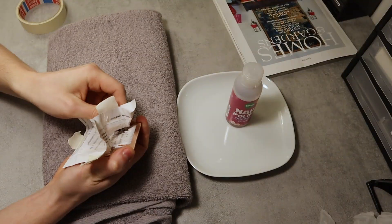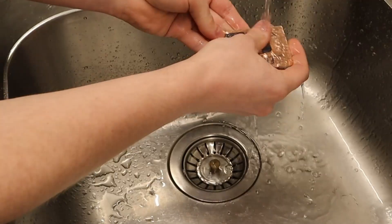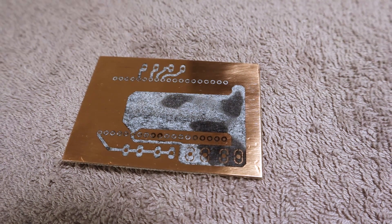When it's dry I remove the wrapping and rinse it under water and just scrub the rest of the paper off with my fingers. This is how it turned out.